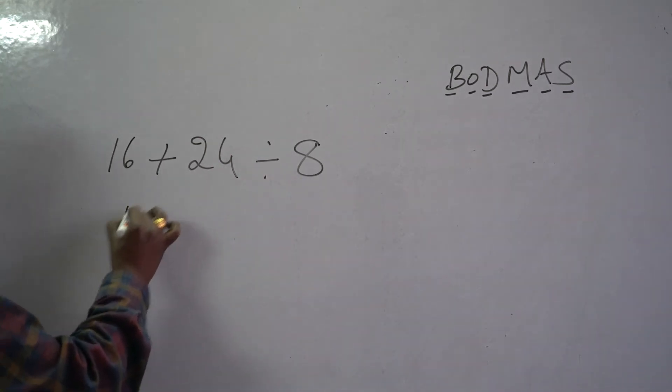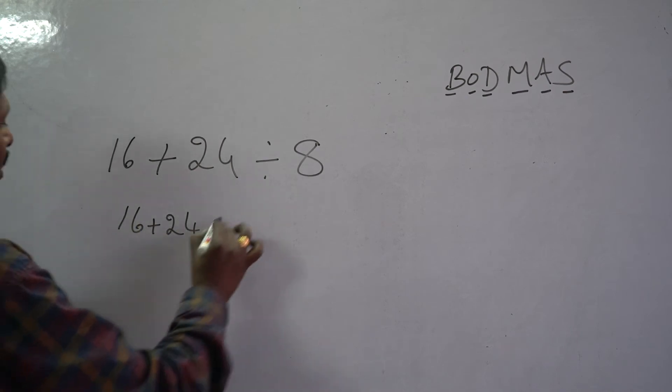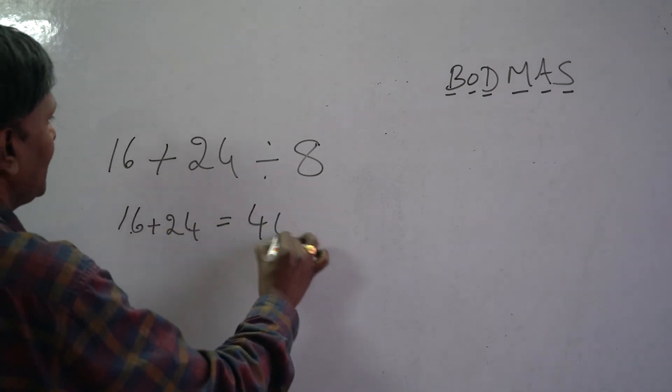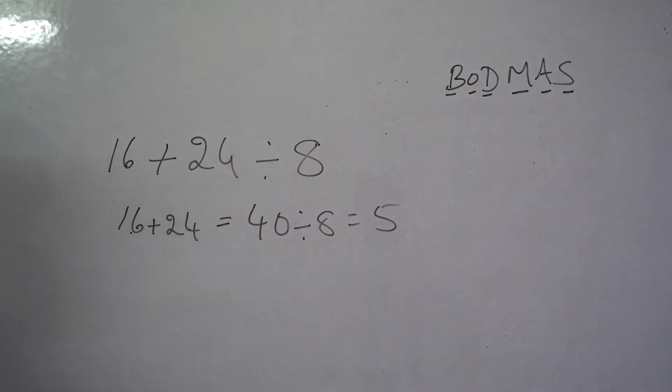16 plus 24, how much? 40, right? Divided by 8. How much? 5. This is one answer.